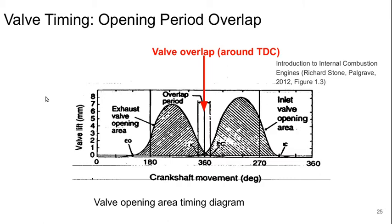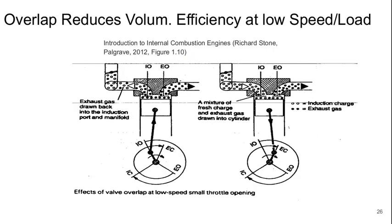Interestingly, it's common in valve timing to actually have an overlap period between the intake and exhaust valves being open. The exhaust valve opens, then the intake valve opens, and there's a small region where both valves are open right around top dead center. It's not really obvious at first why you would want that — it seems like it might have some undesirable effects — and the reality is that it depends on what engine operating condition you're at. That overlap does reduce the volumetric efficiency at low engine speeds or low engine load.